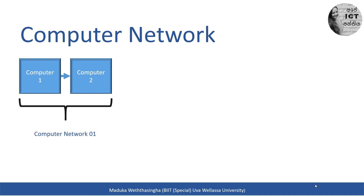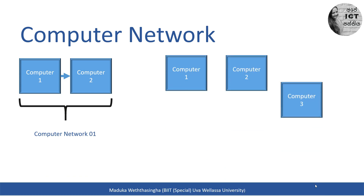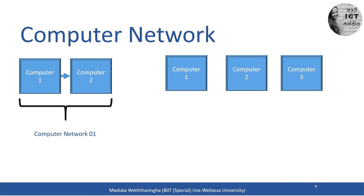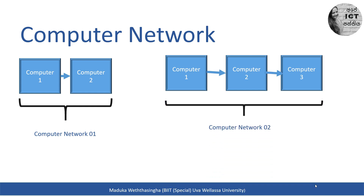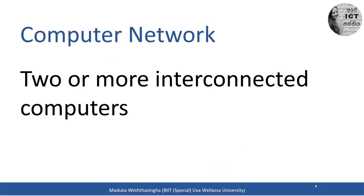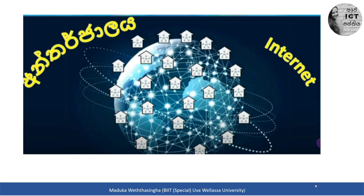Let's see another example. There is computer one, another computer, and yet another computer. If we connect two or more computers together, that is also known as a computer network. So, a computer network means two or more interconnected computers.